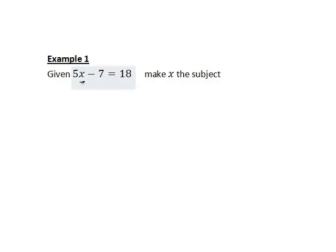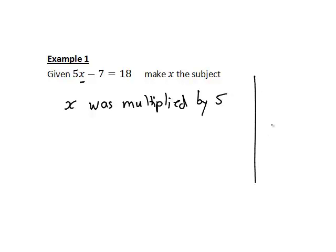The first thing that happened to x is it was multiplied by 5, or we could just write a note of this over here, basically x times 5. Then what happened to the result?